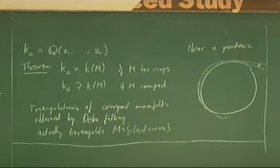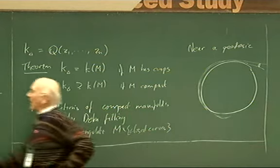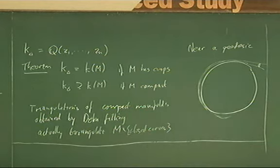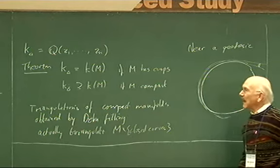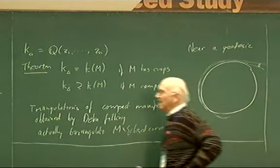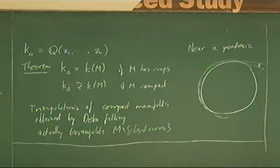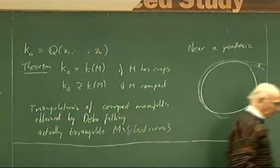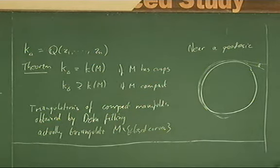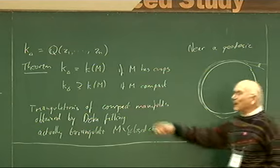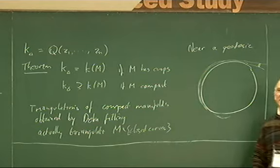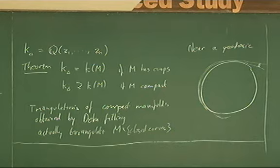From an ideal triangulation — and these are fairly easy to come by — you get this way of computing the invariant trace field. Once one has a triangulation, Craig also described how snap and snappy compute the hyperbolic structure, and you can therefore get the hyperbolic structure accurately.